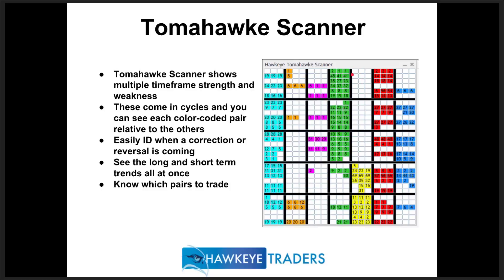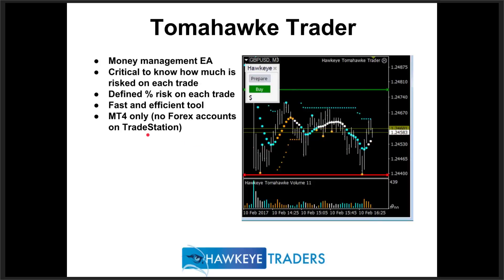The scanner identifies a change in trend and tells you which pairs to trade. Looking at the Pound — shown in orange — if it has no color, it's currently weak. The Canadian may show long-term strength but is currently pulling back and weakening on the one, two, and three-minute charts. Money management is a fundamental part of the Tomahawk system — it's absolutely critical to know how much we're risking on each and every trade.